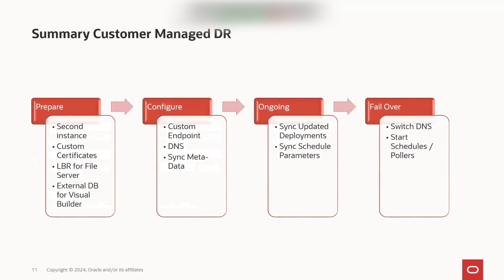As a summary: prepare the second instance with certificates, load balancer, and the database; then configuration of the custom endpoint, DNS, and metadata synchronization, which needs to be automated to update deployments. Also ensure changes to schedules are reflected on both sides. In a case of failover, it's a switch of the DNS entry, then starting schedules and pollers for integrations. Deactivate schedules and pollers on the primary side if it comes back up before a failback is performed. This is customer-managed — the customer must perform the steps and implement automation for metadata synchronization.